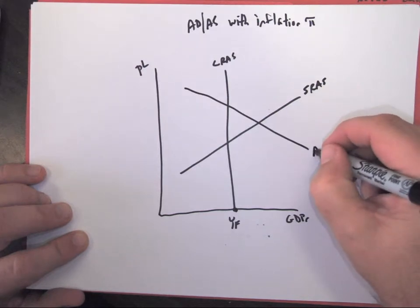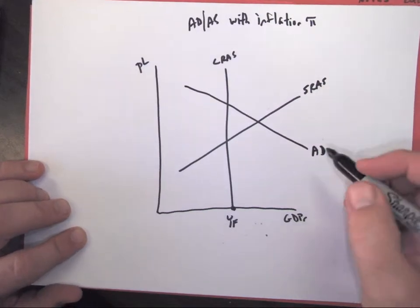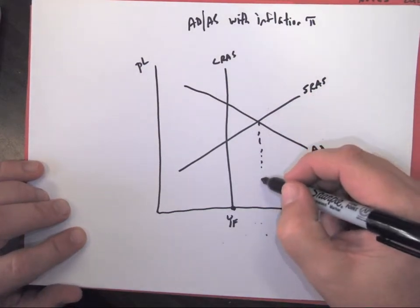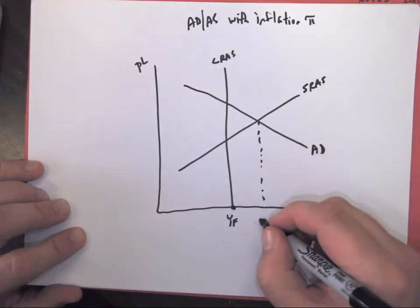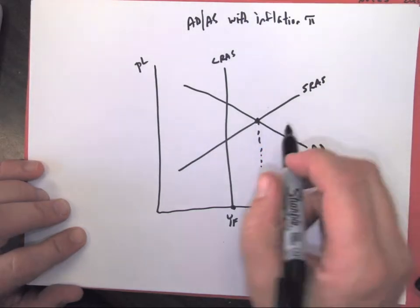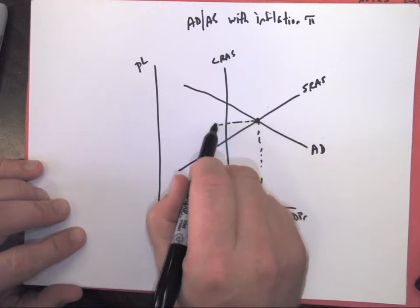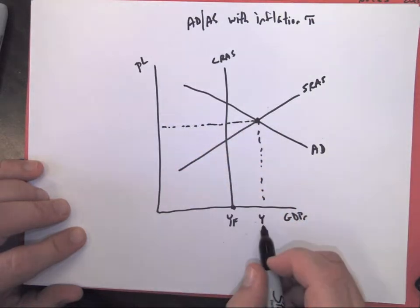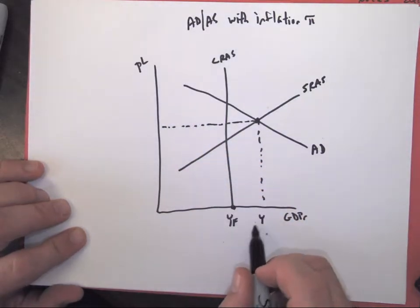Our aggregate demand, all of our people that want to buy things, are going to be at an inflationary gap. Their short run equilibrium, our production, is going to be to the right of full employment.